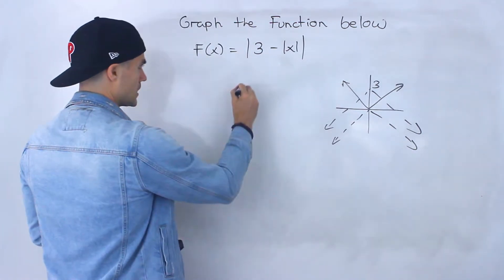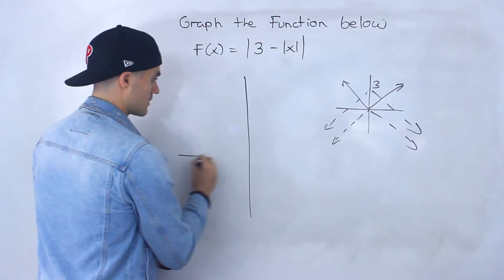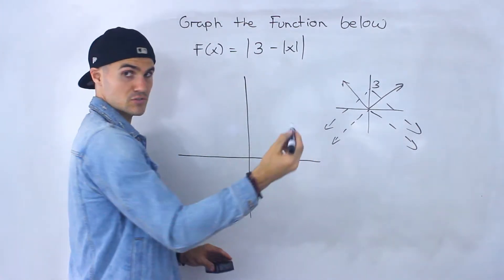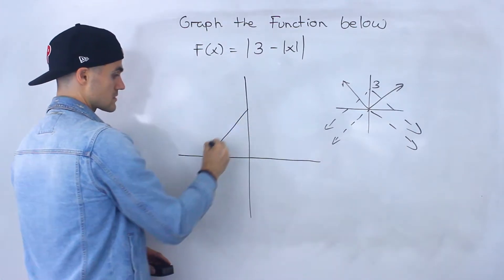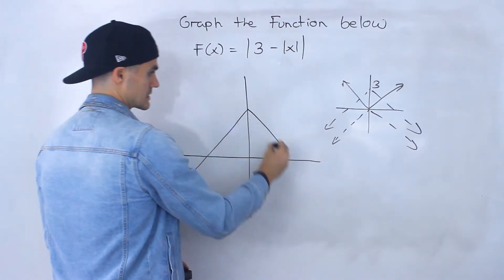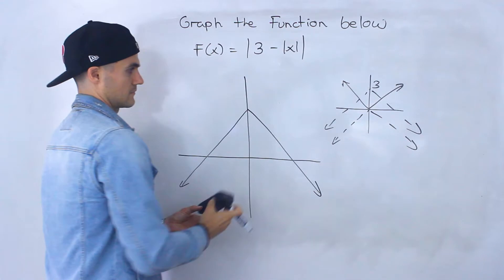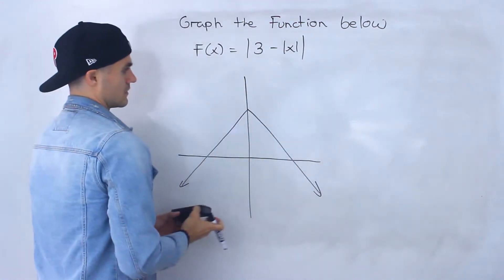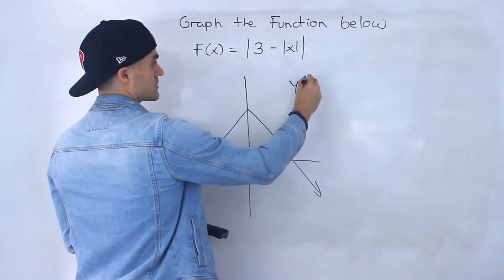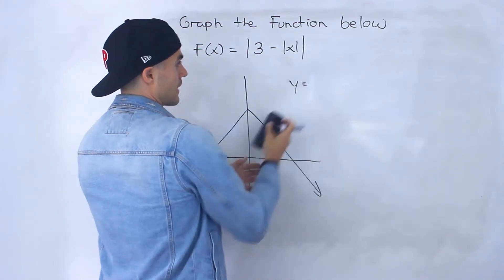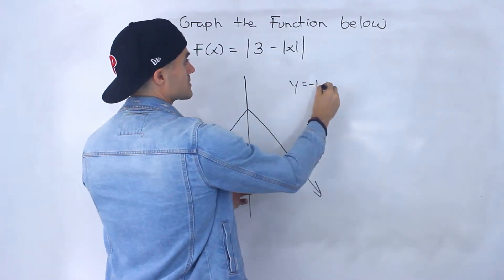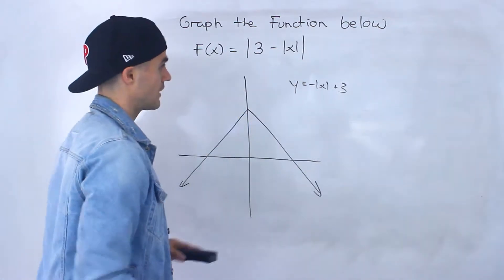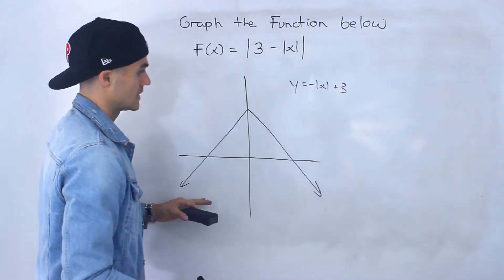Let me make a bigger graph here. y equals 3 minus absolute value of x — which we can write as negative absolute value of x plus 3 — looks like this. We just took that expression within the outer absolute value and graphed it.